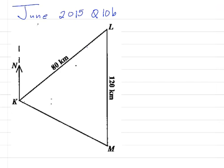Alright, this is June 2015 question 10b. It says the diagram below, not drawn to scale, shows the relative positions of three fishing boats K, L, and M. L is on a bearing of 40 degrees from K, and M is due south of L.